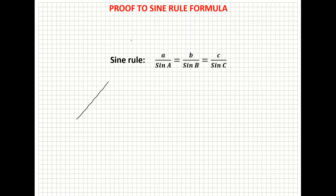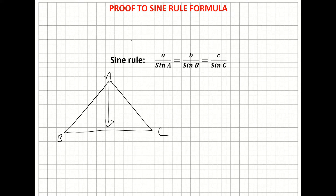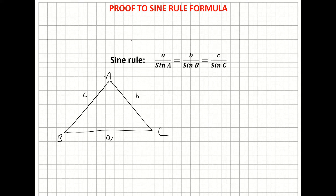I'm going to sketch out a triangle and label my three vertices A, B and C. The side opposite angle A is going to be my lowercase side a. The side opposite angle B is going to be my lowercase b. And the side opposite angle C is going to be my lowercase length c. So I'm just labelling a triangle of three corners and three sides.